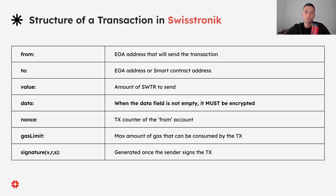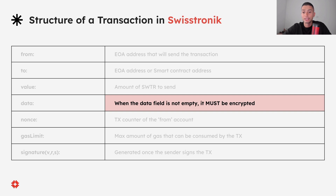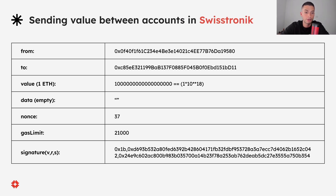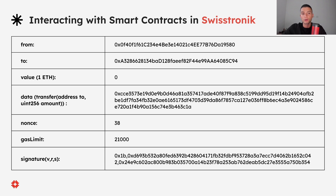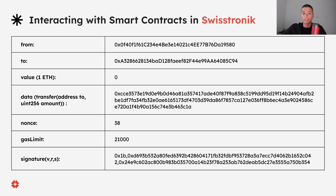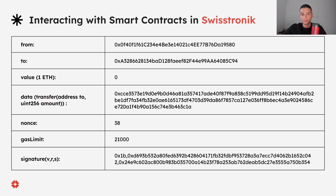Now let's talk about the structure of a transaction in SwissTronic. Basically, all the fields will have the same content as Ethereum transactions, but only the data field will change — this is where SwissTronic.js comes in. To send transactions where the data field is not empty, we must encrypt this value with SwissTronic.js before sending the transaction to the network. When sending value between accounts in SwissTronic, the transactions have no difference from Ethereum because the data field is empty. The change comes when we interact with smart contracts — the data field becomes the result of encrypting the function selector and parameters using SwissTronic.js. Now that we understand these concepts, we can start our SwissTronic.js journey.